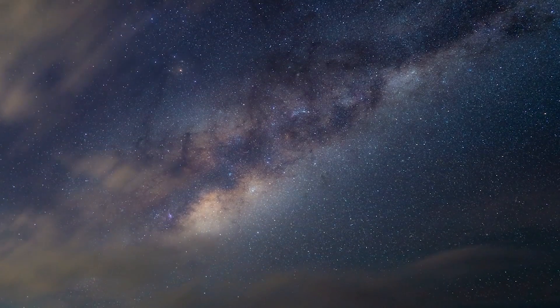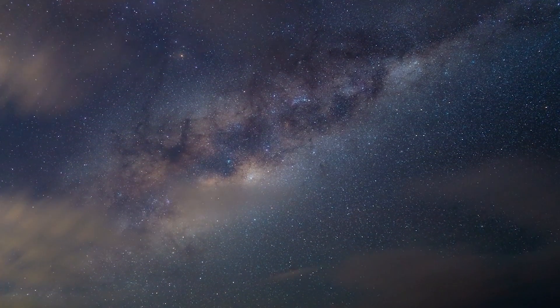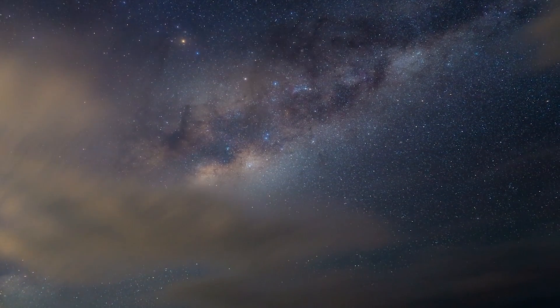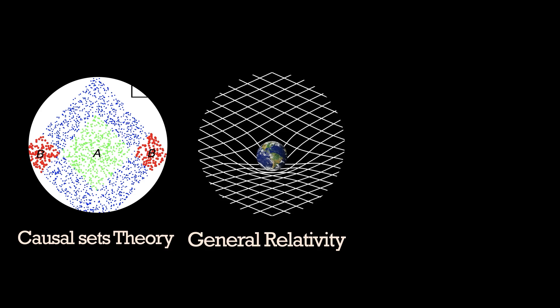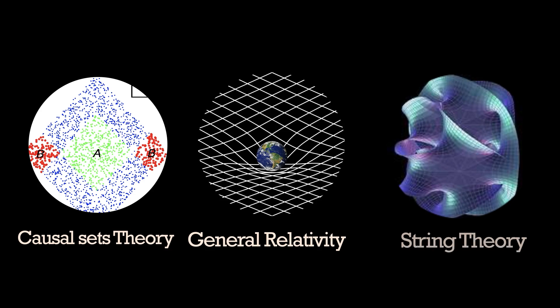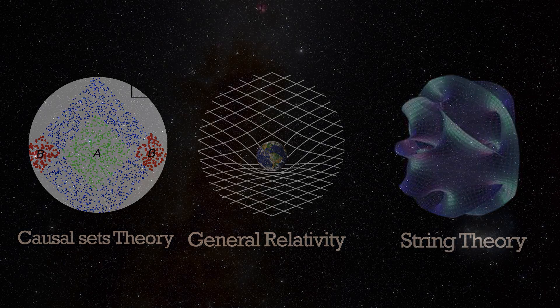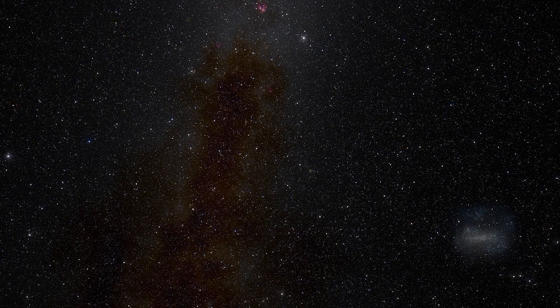There are other ways people have tried to explain singularities through different theories. From my research, I found they either attempt to reject singularities altogether, leave it up to interpretation without going further into how they exist, or offer a different method to explain them. And it all came down to how they theorize spacetime.